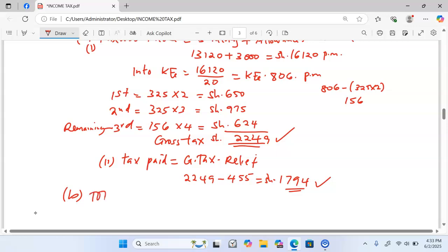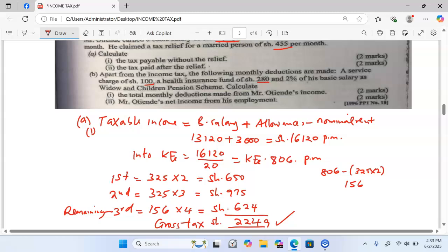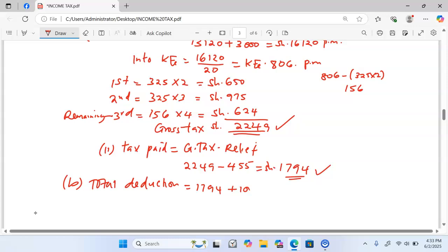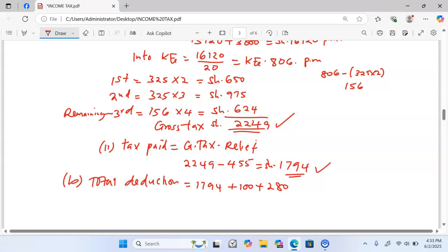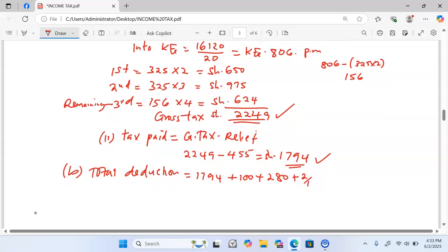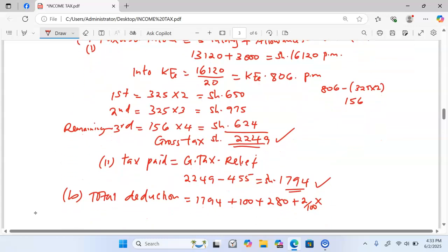So for us to get total deductions, the first deduction is part of the tax paid of 1,794. Apart from that we are told we have a service charge of 100 plus 280 as the insurance fund. And 2% of the basic salary, that is 2 out of 100 of the basic salary.